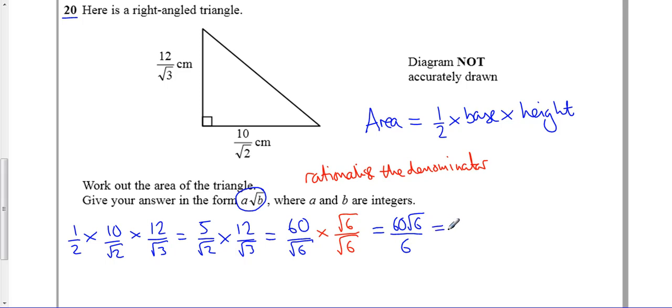60 divided by 6 is 10 root 6, where a is our 10, b is our 6, the number inside the root. And that's it, we're done. A little bit of root knowledge and area knowledge there.